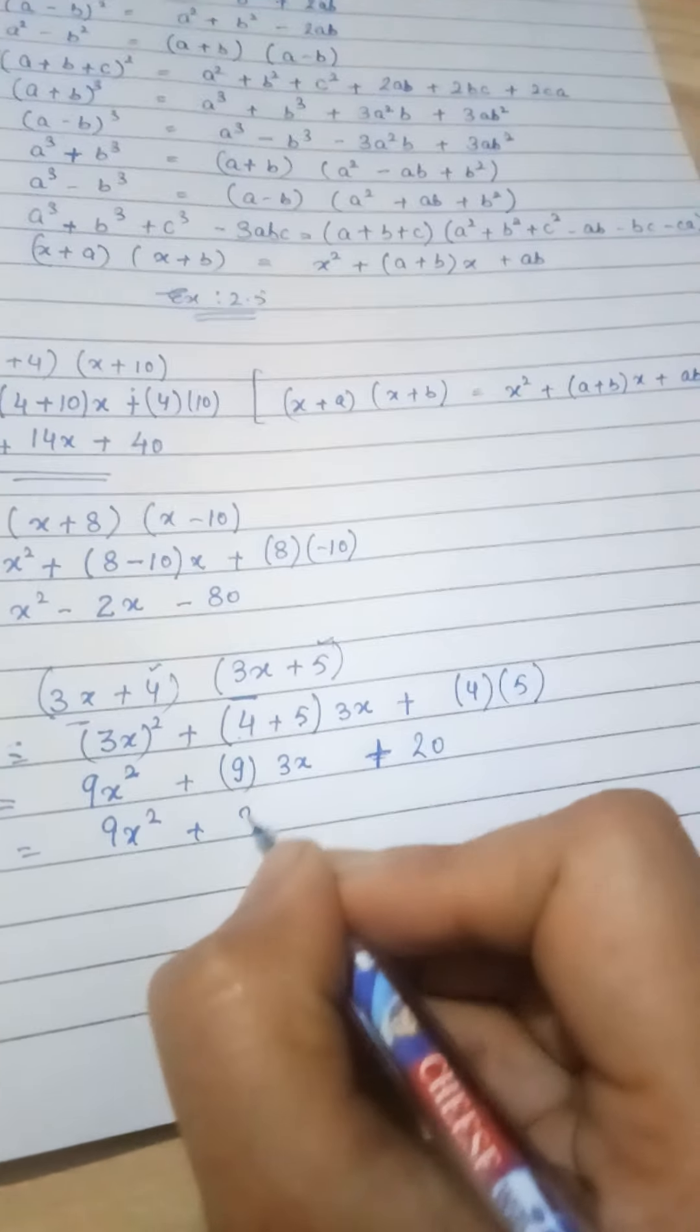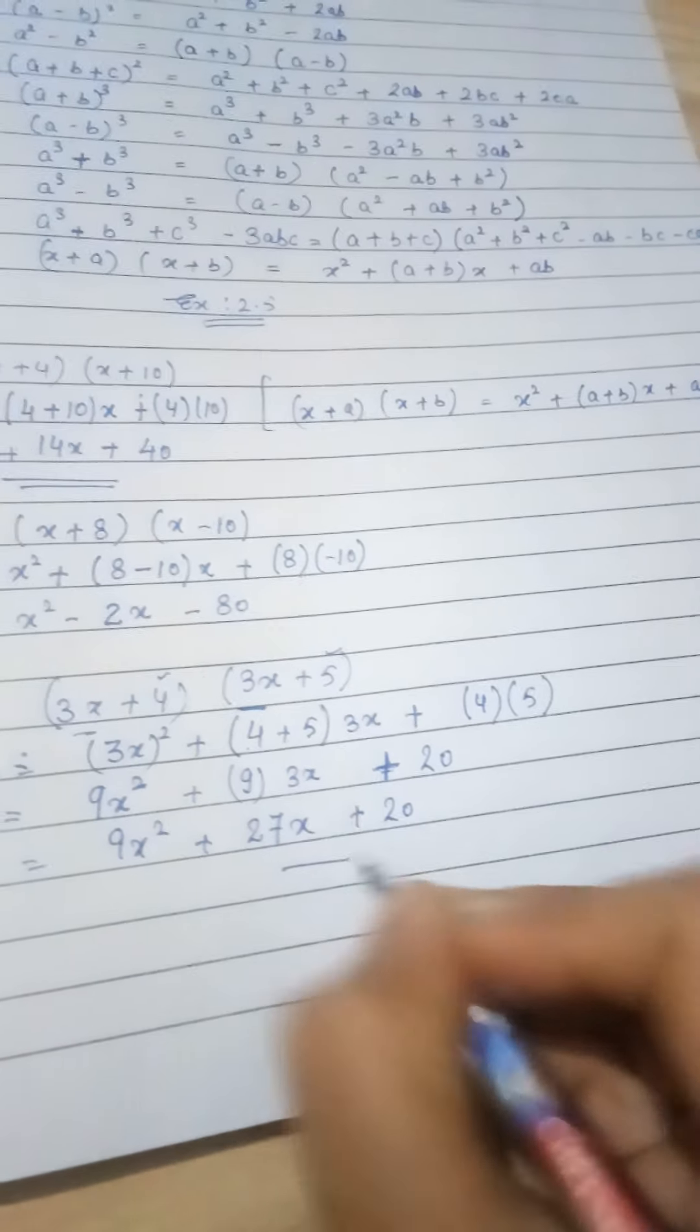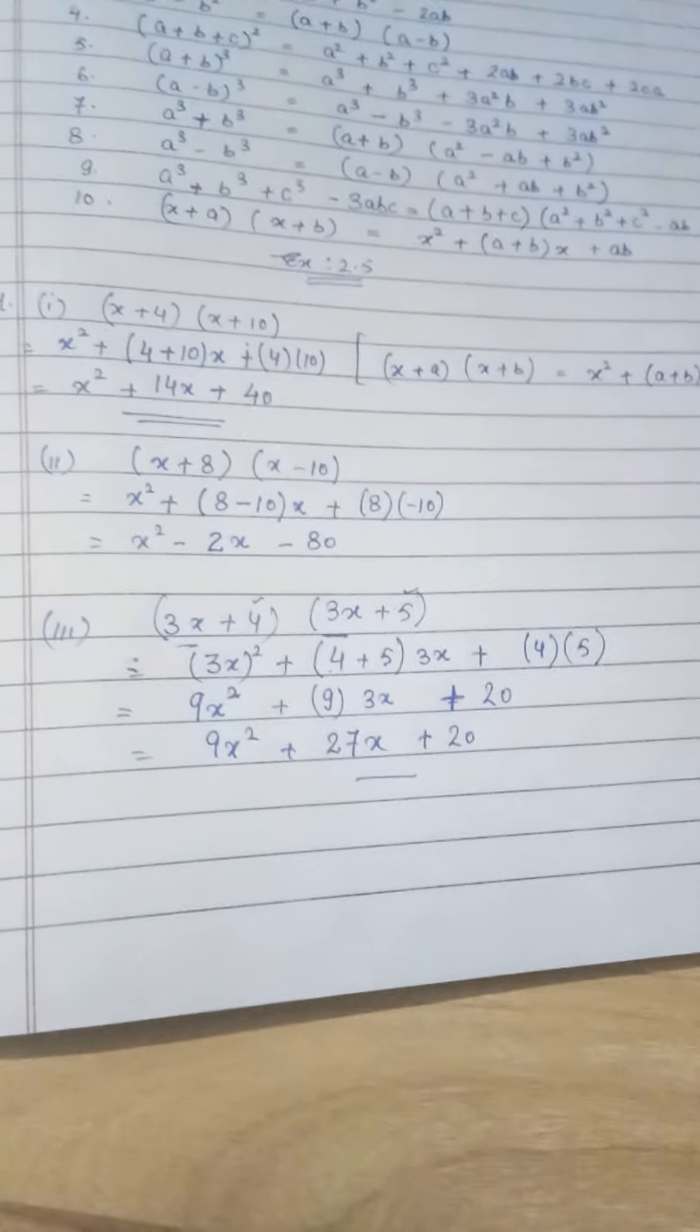x squared plus 4 plus 5 is 9 into 3x, that's 27x, plus 4 times 5 is 20. Now after solving the brackets you will get 9x squared plus 27x plus 20. This is the first sum.